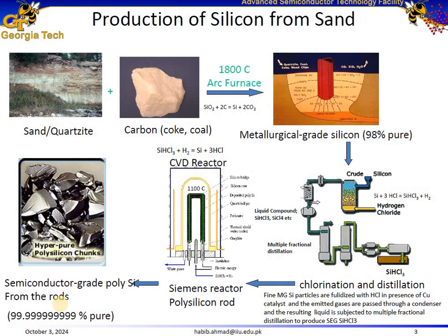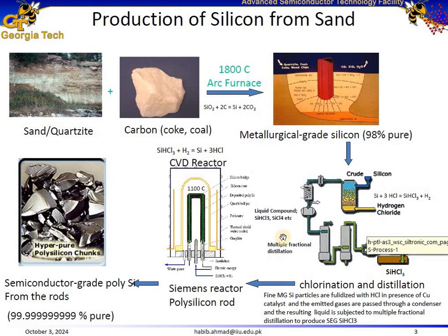The reactor grows polysilicon rods through this deposition process, which are later processed into semiconductor-grade silicon. The final product has an incredibly high purity required for advanced semiconductor applications. This multi-step process transforms quartzite into highly purified polysilicon through reduction, then chlorination, followed by distillation, and finally chemical vapor deposition, making it suitable for manufacturing electronic components.